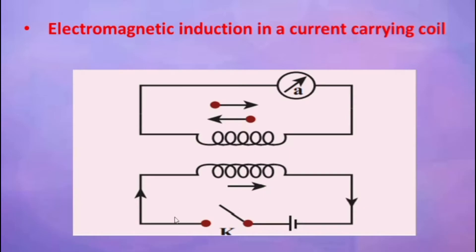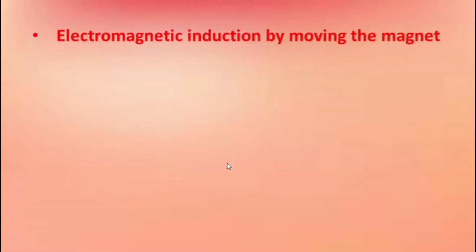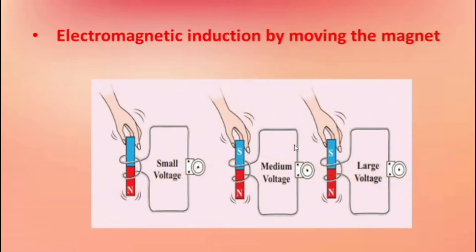The next experiment is electromagnetic induction by moving the magnet. In this experiment, current is generated by the movement of the magnet in and out of the coil. When we move the magnet in and out inside the coil, there is a change in EMF, so EMF is produced.